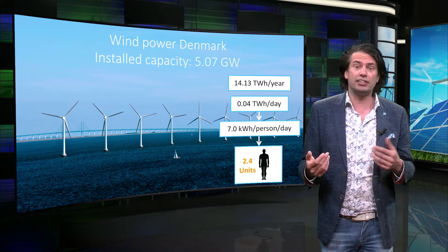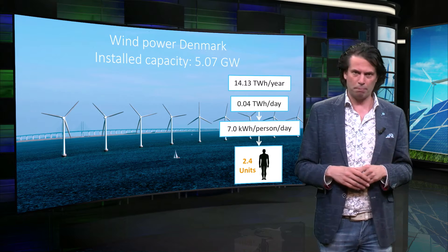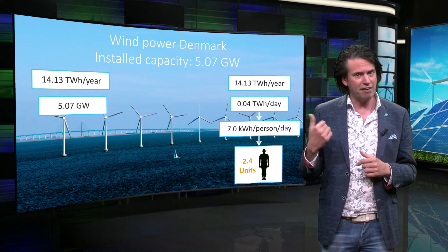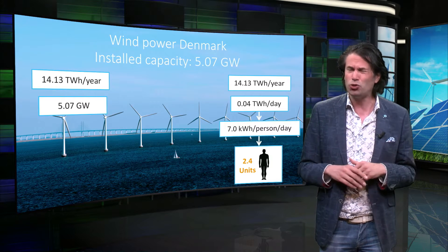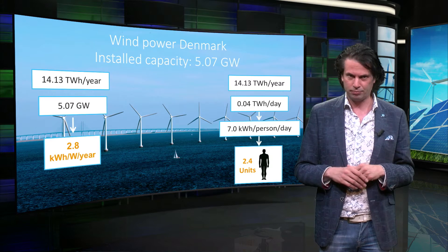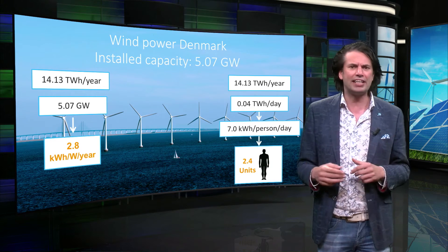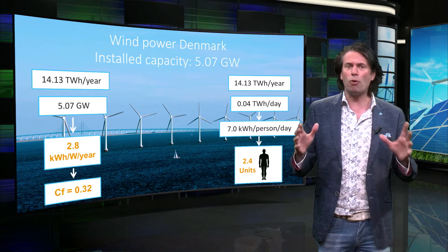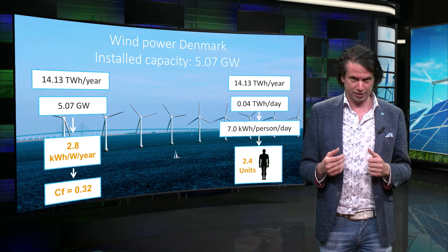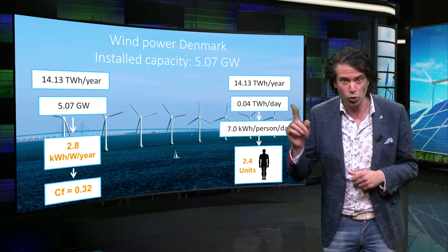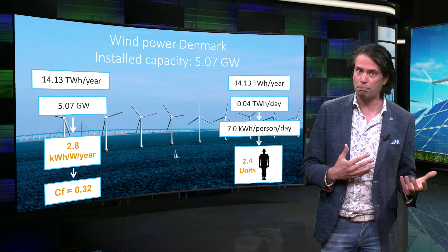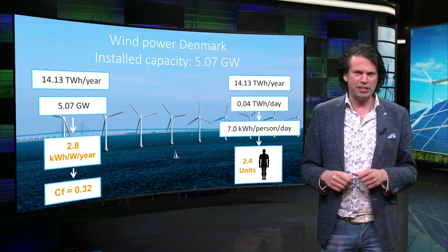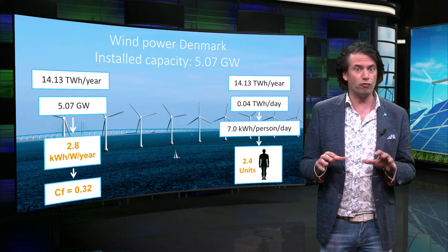We can calculate a value expressed in kWh per watt of installed capacity. In the case of Denmark, we divide the 14.1 TWh per year by the 5 GW of installed capacity to get about 2.8 kWh per watt of installed capacity. Dividing again by the hours in a year gives a capacity factor of 0.32. Comparing this with the capacity factor of hydroelectricity of around 70%, we conclude that wind energy produces less electricity per installed capacity unit than hydroelectricity. This is caused by daily and seasonal changes in wind speeds and because a wind turbine does not operate at maximum power for low wind speeds.